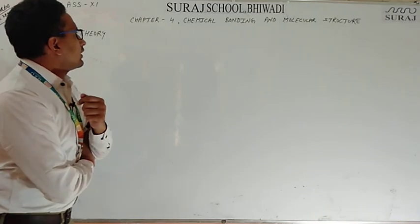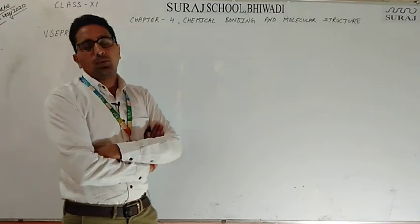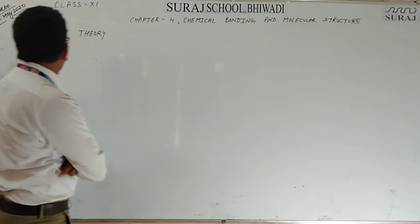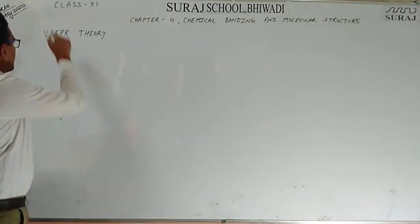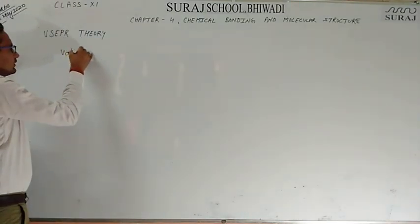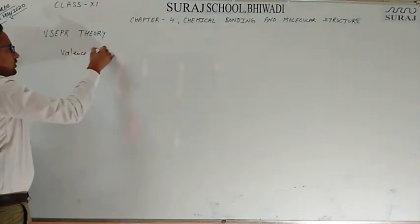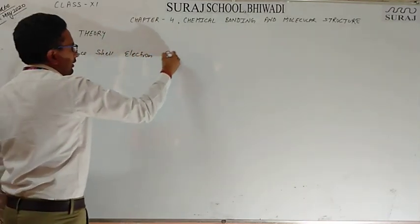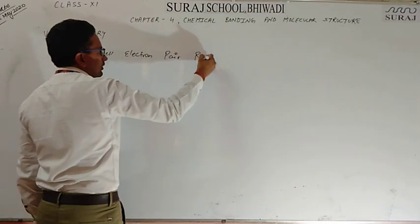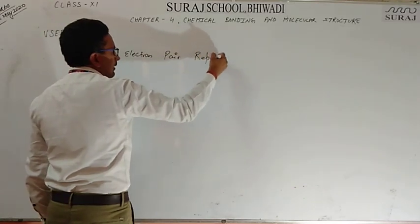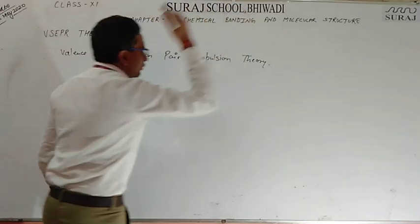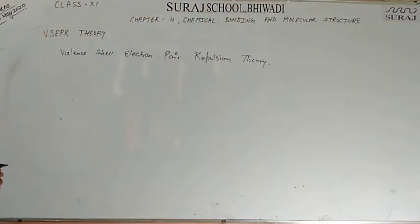The previous video was on chemical bonding and molecular structure, i.e., the Lewis dot structure. In today's video, we are going to discuss about VSEPR theory. The full form of VSEPR is Valence Shell Electron Pair Repulsion. This is the full form of VSEPR.